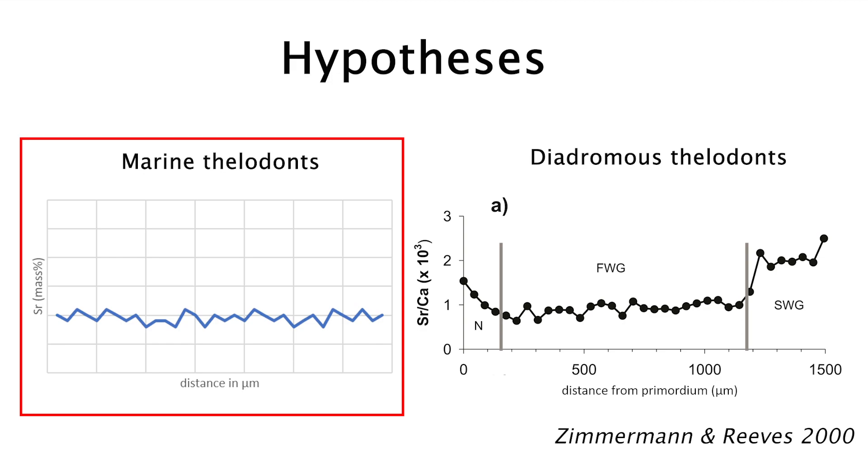My first hypothesis relates to fully marine thelodonts. These samples should show high absolute strontium content throughout all their growth stages recorded in their scales, as they spent their whole life in the marine environment with high absolute strontium content.